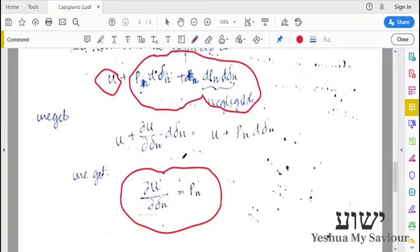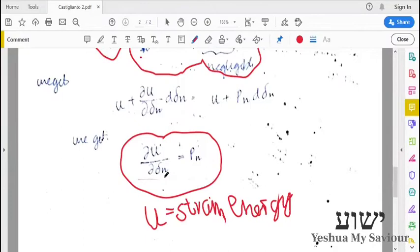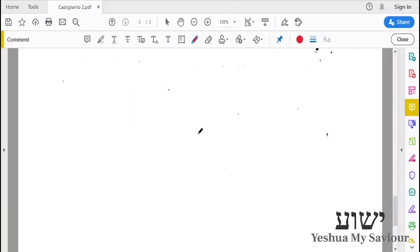So what this means is, where U is the strain energy, if we find the strain energy of a body and if we want to find what load causes a particular deflection—that is, delta n is a deflection—so we want to know what load is causing this deflection, then we just have to find strain energy and differentiate with respect to displacement. Then we will get the load which causes that displacement. So that is what is the crux of Castigliano's second theorem.